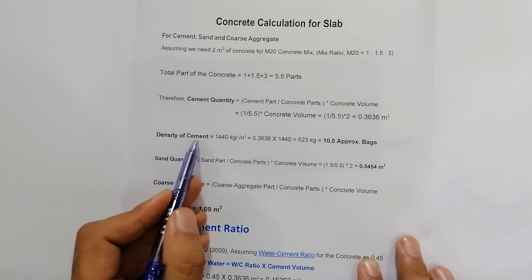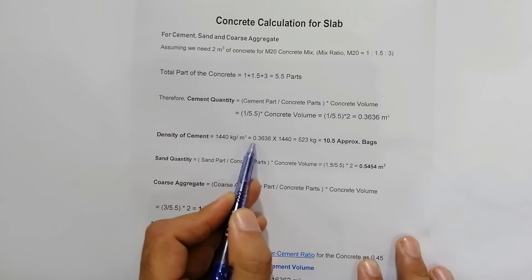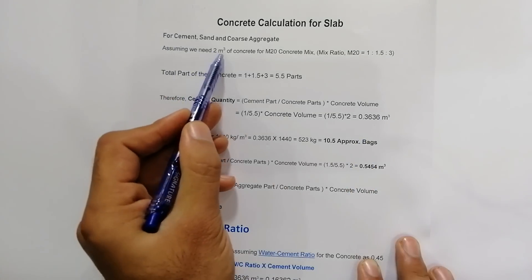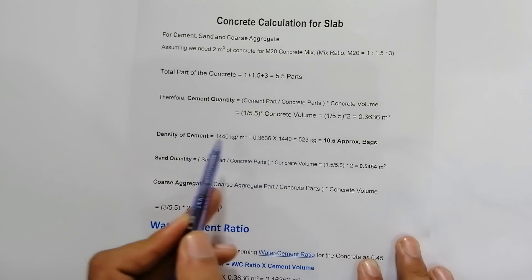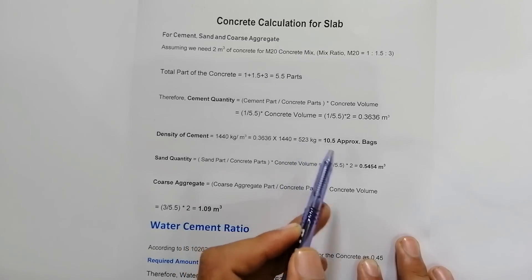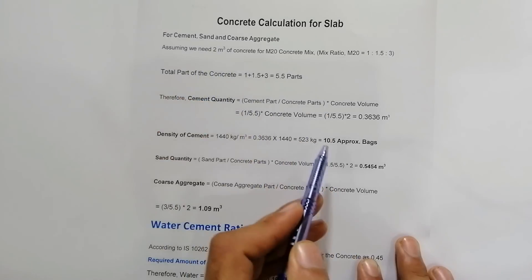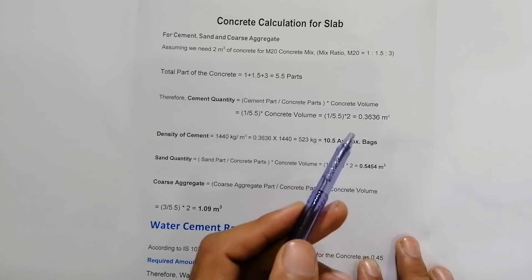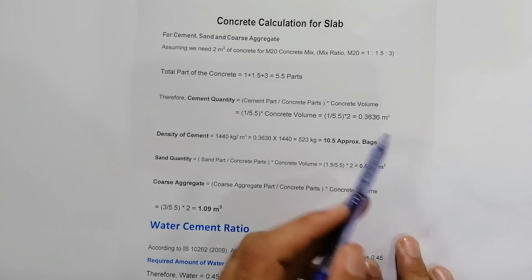Now convert cement volume to number of bags. The density of cement is 1440 kg/m³. So: 0.3636 m³ × 1440 = 523 kg of cement. Since 1 bag = 50 kg, we need 523 / 50 ≈ 10.5 bags of cement for 2 m³ of M20 concrete.